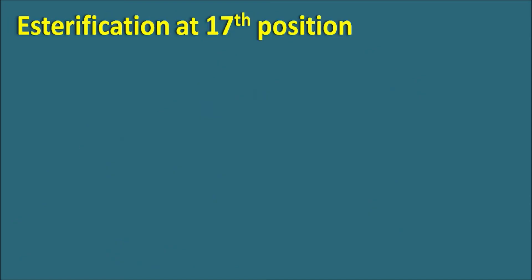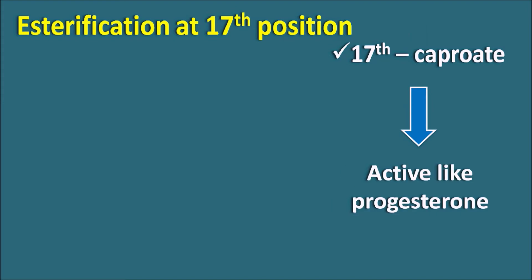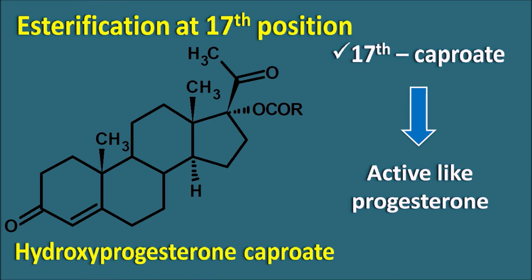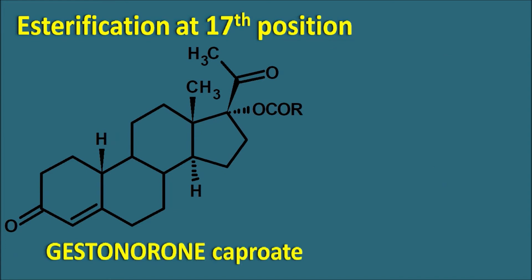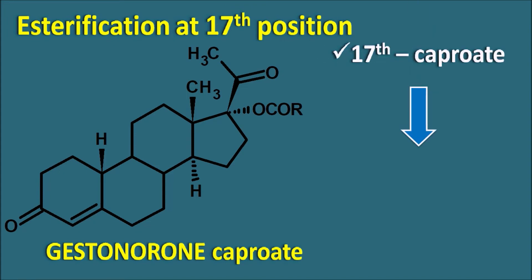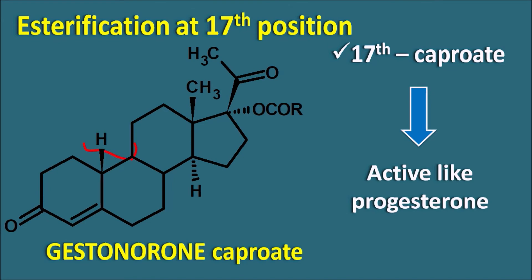Esterification at the 17th position — for example, introducing a caproate ester — results in drugs with progesterone-like activity and a prolonged duration of action. One such drug is hydroxyprogesterone caproate, where a 17-alpha hydroxyl group is introduced and esterified to form the caproate. The caproate ester is formed by a 10-carbon carboxylic acid and increases the duration of action; the 19th position retains the methyl group. Similarly, gestonorone caproate has the 17th position caproate ester for prolonged action, but at the 19th position hydrogen is present instead of methyl, making it a nor-derivative.